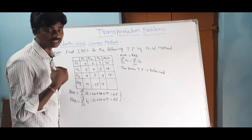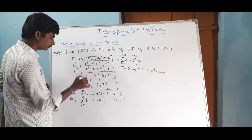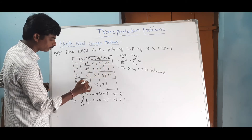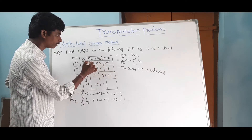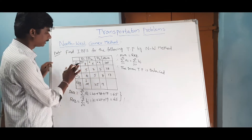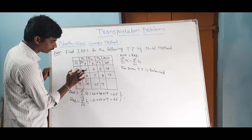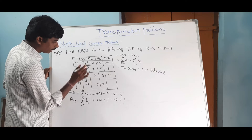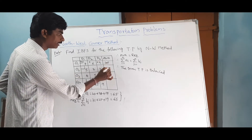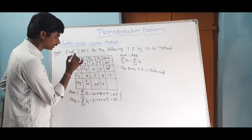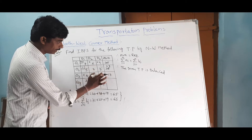We need 21 units at the first destination. But the first origin has only 20 available. So we allocate 20 units to the North-West corner cell. That means x11 = 20. This is the first allocation. The North-West corner element is filled.